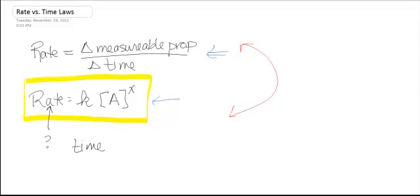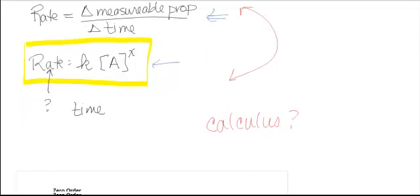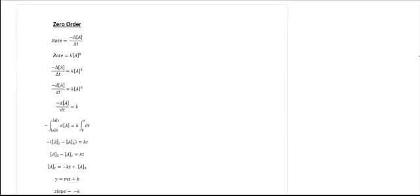If you pull out the worksheet you picked up in class, it has three columns: zero order, first order, and second order. The whole point of that worksheet is to show you some really important things and to take you through the calculus. For those of you who have not had calculus, don't worry — I'm not going to ask you to derive it. I'd just like those of you who have calculus to see where these things are derived from.